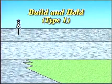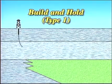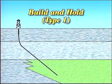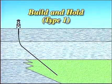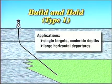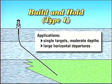The build and hold pattern employs a shallow initial deflection from vertical and a straight angle approach to the target. It's good mainly for reaching single targets at moderate depths, and sometimes for drilling deeper wells with large horizontal departures.